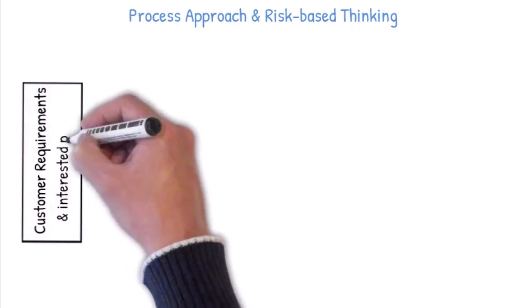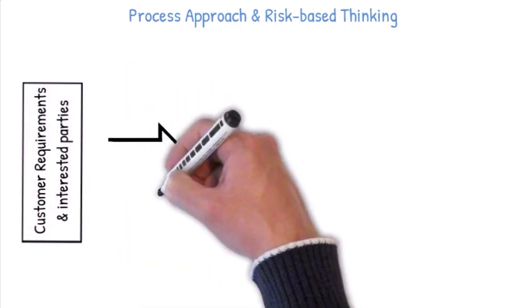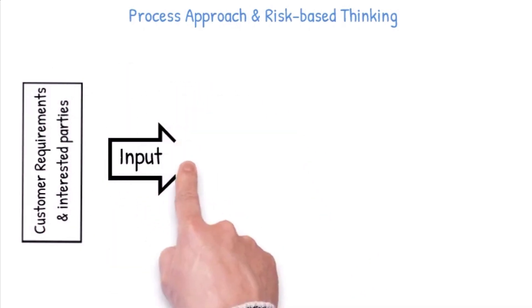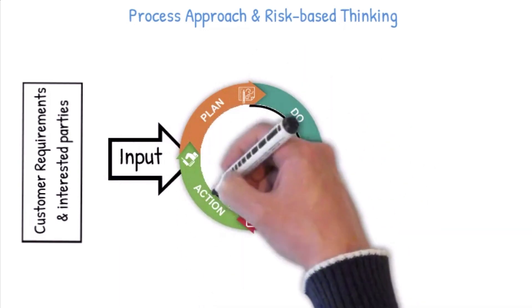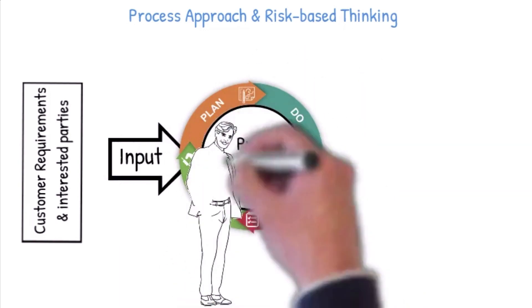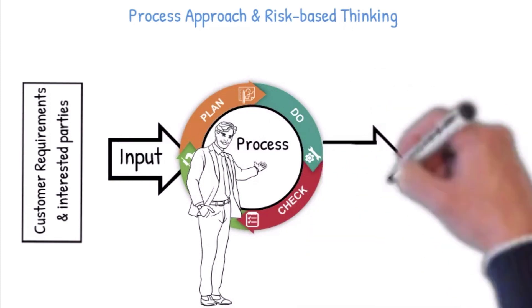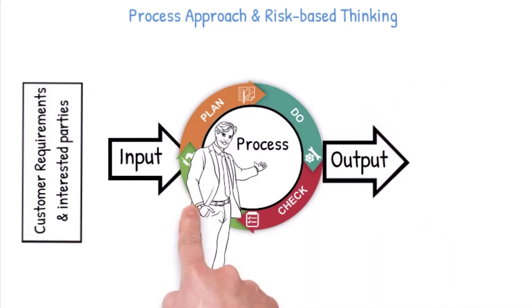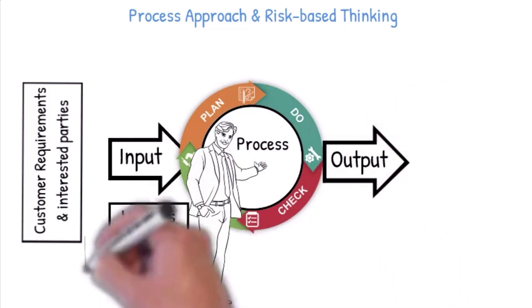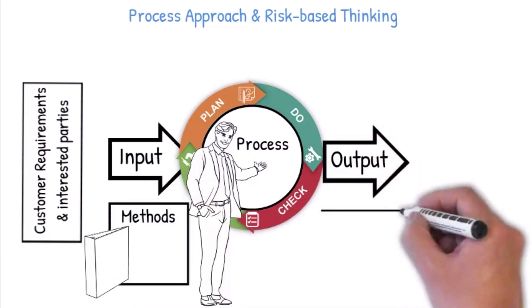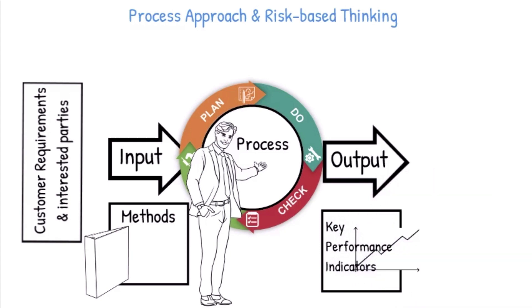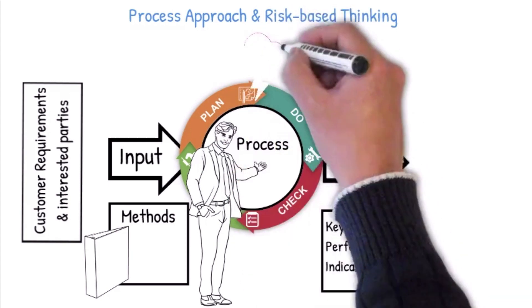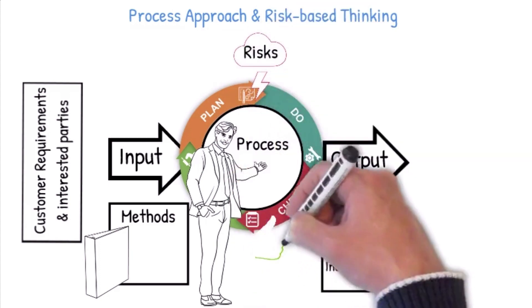Process auditors must have a clear understanding of the process approach, starting with identifying the customer requirements and incorporating the Plan-Do-Check-Act (PDCA) cycle, to assess how the organization planned its processes and their interactions. This involves verifying how results are produced by this interrelated system of processes and how the organization compares results against its objectives to identify possible risks and opportunities.